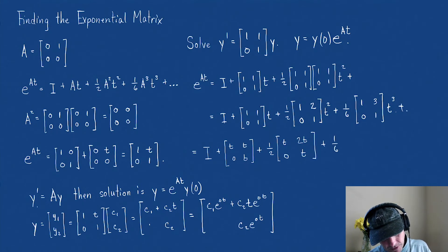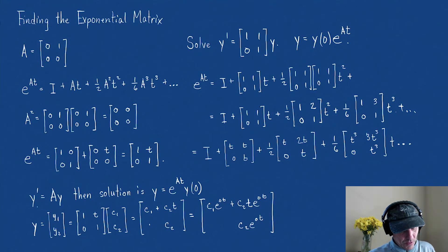Let's write this out again as I plus [[t,t],[0,t]] plus (1/2) times [[t²,2t²],[0,t²]] plus (1/6) times [[t³,3t³],[0,t³]] and this is going to go on.